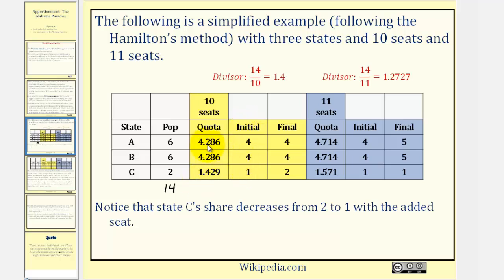And now to find the initial allocation, also called the lower quota, we remove the decimal part, giving us an allocation of 4, 4, and 1. But because this sum is 9 and there are 10 seats, the extra seat goes to the state that has the largest decimal part of the quota, which would be state C. So state C gets one more seat, giving a final allocation of 4, 4, and 2, giving us a total of 10 seats.